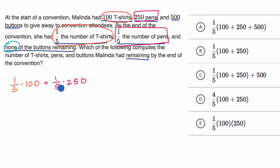So let's see, do we see one-fifth times 100 plus one-fifth times 250 over here? Well, no, we don't see that exactly. But we can see that all of the choices here, it looks like they have some fraction times the sum of some things, and then in some cases they might add something else.